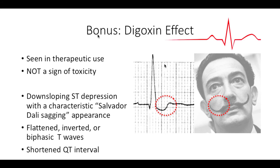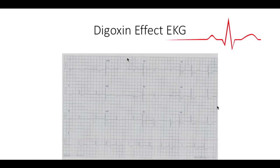Lastly, I want to talk about the digoxin effect, because this is not a sign of toxicity. It's something thrown around a lot — people talk about the Salvador Dali mustache sign — and everybody thinks it means digoxin toxicity. It doesn't. This is seen in therapeutic digoxin use. Just being on digoxin can cause down-sloping of the ST interval and changes in your T wave — it can be flattened, inverted, or biphasic. That swooping and flattening is supposed to resemble Salvador Dali's mustache. So if you see this EKG with no P waves, an irregular rate, and that ST appearance, you can say this person is probably on digoxin — but you can't say anything about whether they're on a toxic dose.